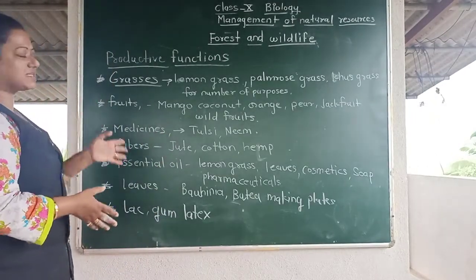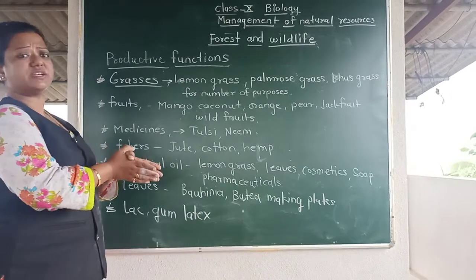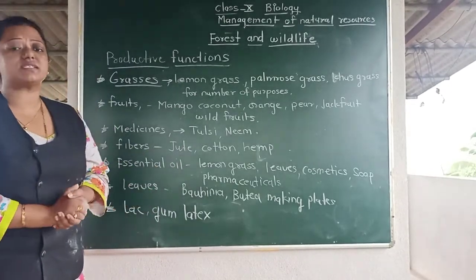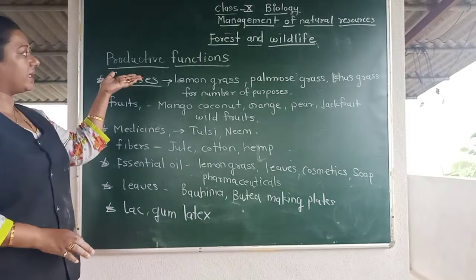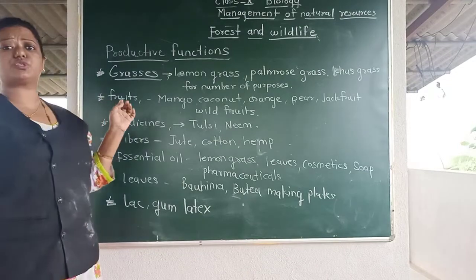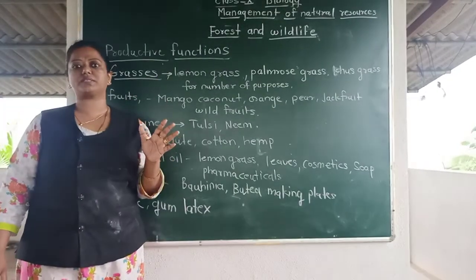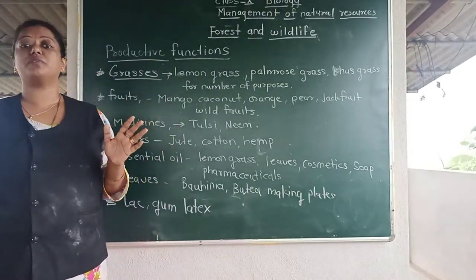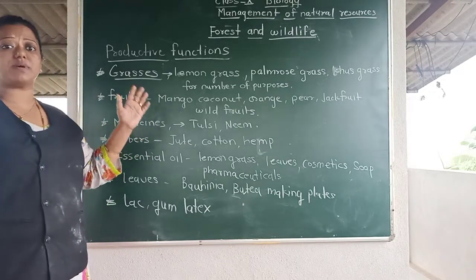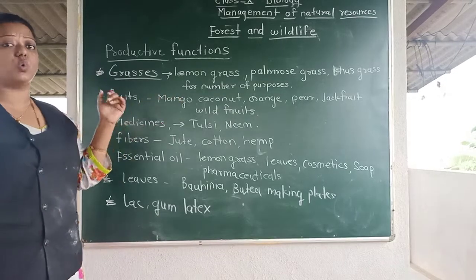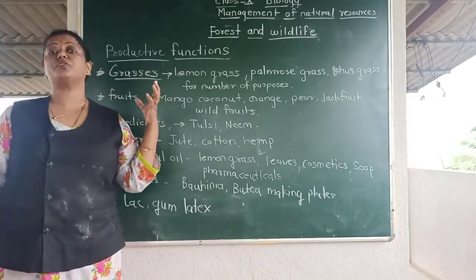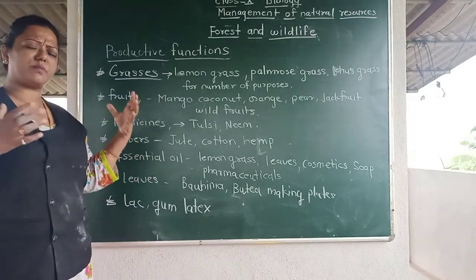Other productive purposes include grasses. Various kinds of grasses such as lemongrass, palm rose grass, and goose grass are obtained from the forest and used for various purposes — these are also important products of the forest.